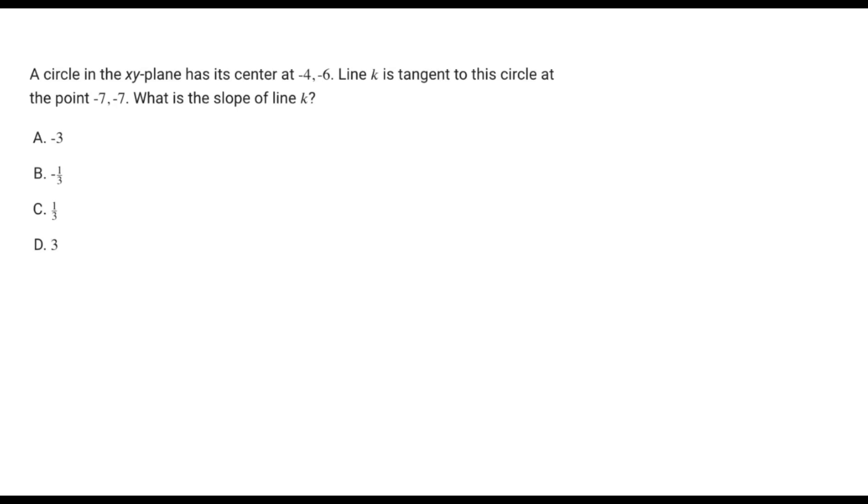Welcome back to another SAT math problem. This one says a circle in the xy-plane has its center at coordinates (-4, -6). Line k is tangent to the circle at point (-7, -7). What is the slope of line k?